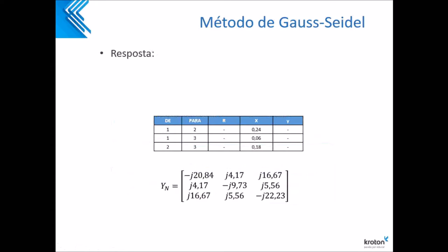Essa aqui eu já tenho a minha matriz montada. Eu já montei a matriz IN, que deu esses valores. Depois eu vou te explicar de onde eu tirei esses valores e como você faz para chegar neles — tanto de Y11, Y12, Y13, Y21, Y22, Y23, Y31, Y32, Y33. Lembrando que na matriz IN, a diagonal principal sempre será negativa. Essa é a regra.